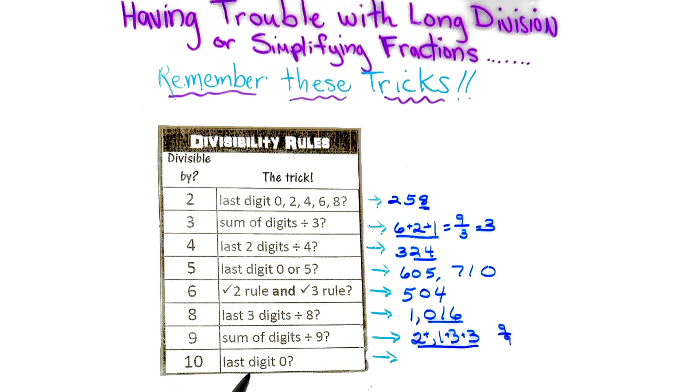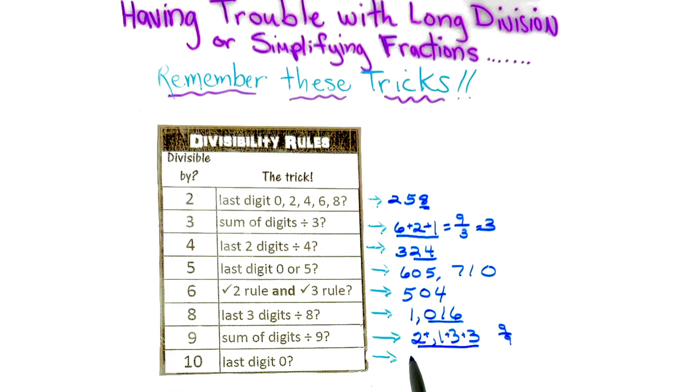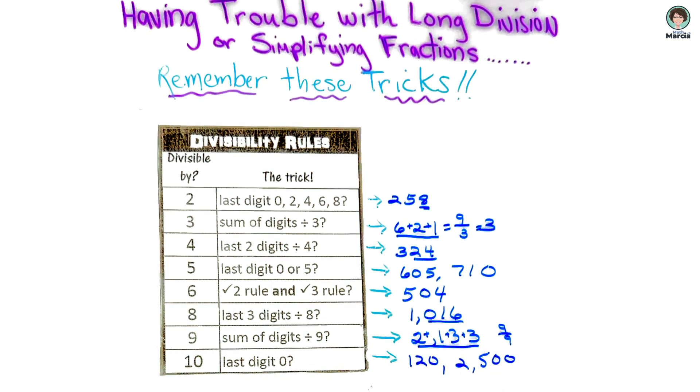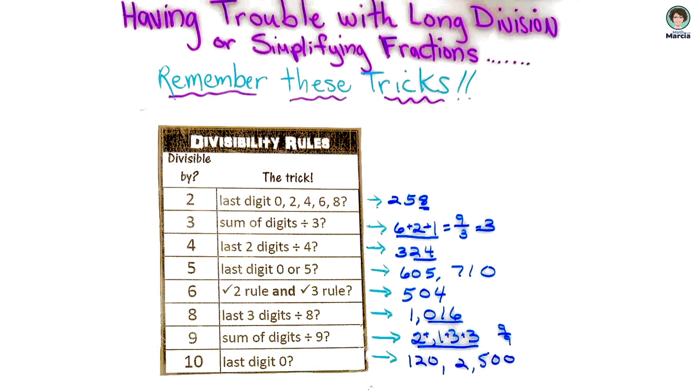And the last one, if the last digit is 0, like 120, like 2,500, we know that 10 goes into it evenly.